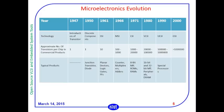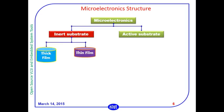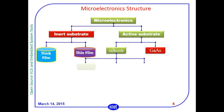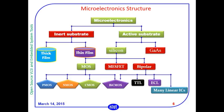This is the microelectronics evolution starting from 1947 to 2000. In microelectronics structures, there are inner substrate, active substrate, thick film, thin film, silicon, gallium arsenide, MOSFET, MESFET, bipolar, CMOS, Bi-CMOS, PMOS, TTL, ECL and more. In this course, we have developed materials for the yellow shaded regions — active substrate made of silicon using MOSFET — and we will be using CMOS technology. We have developed course materials for CMOS technology and how to design it using the free EDA tools.